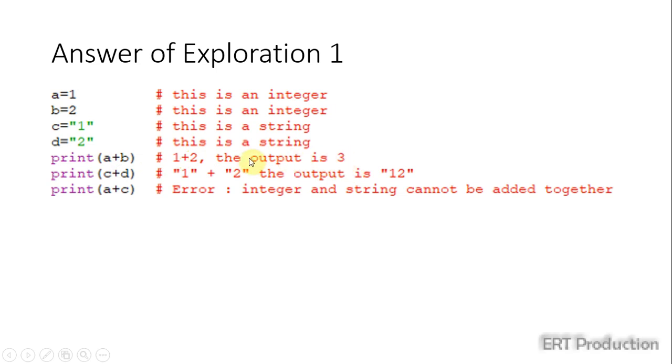However, since c and d are strings, when we add the letter 1 and letter 2 together, Python will treat it as the concatenation of two strings together. And the result is 1, 2. Please note that when I said 1, 2, it means two letters put together. It is still a string.